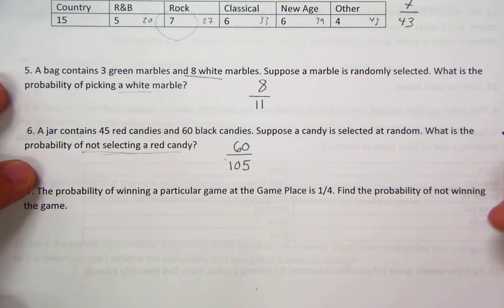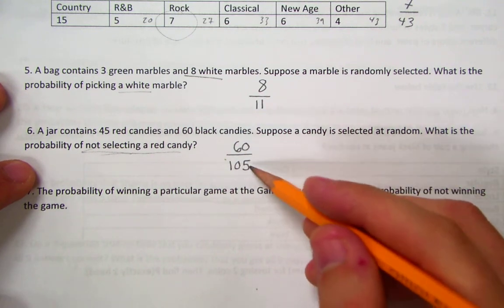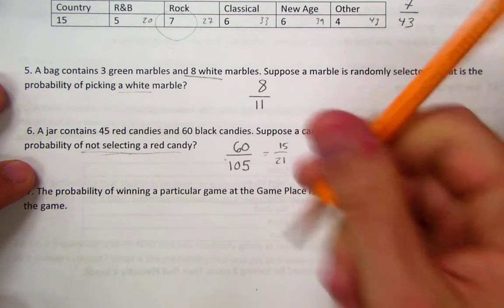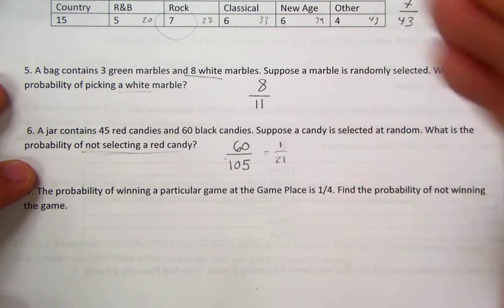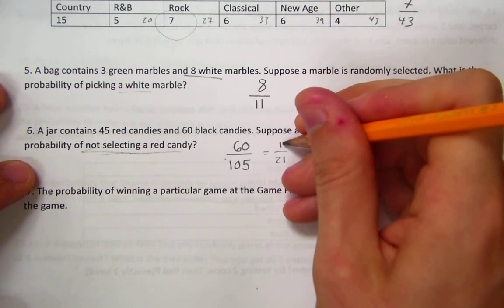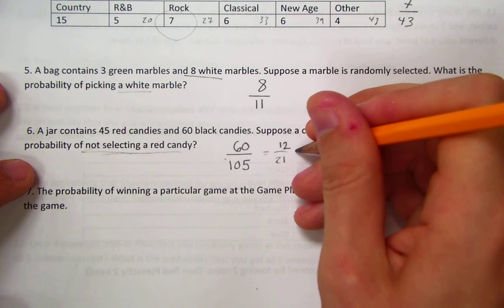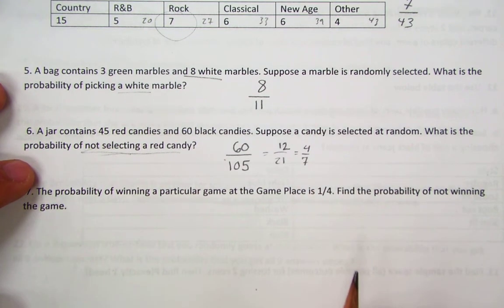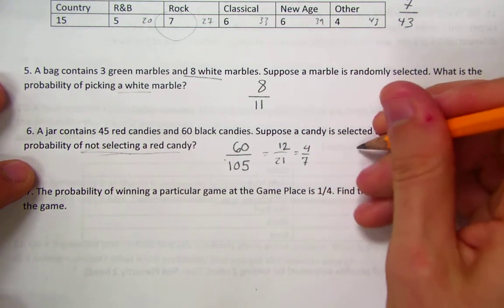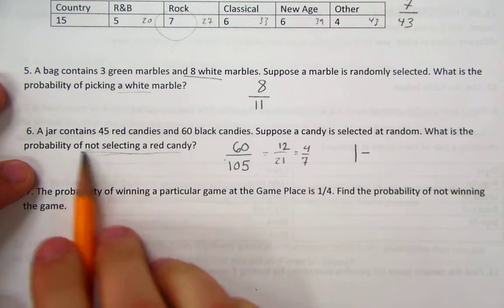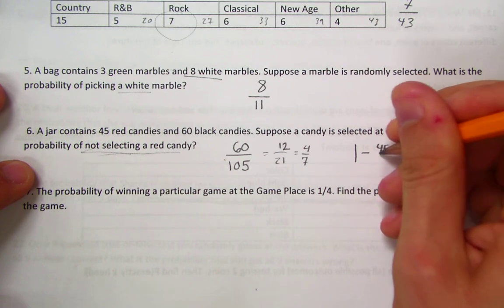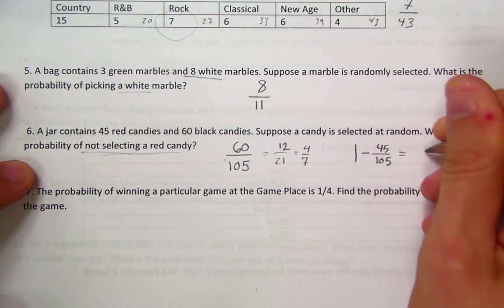You don't have to reduce this. If you wanted to, you could. You can divide both sides. 5 goes into both. That would give me 12 over 21, which is further reducible by 3. You could do 4 over 7. Or again, you could do 1 minus the probability of getting a red candy, which is 45 over 105, which gives you the same answer.